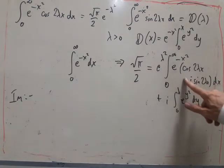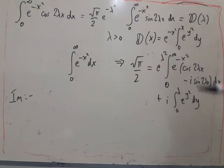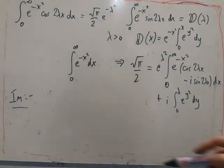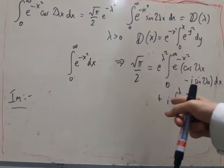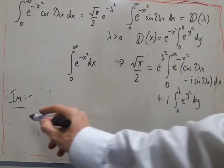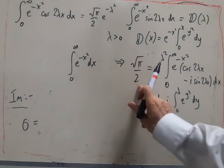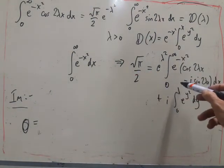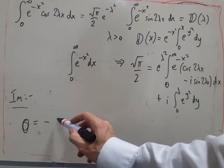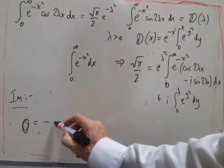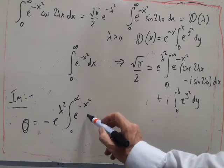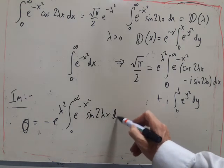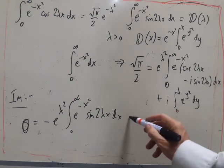Sorry, this should have been a minus sign here because I had e to the minus 2 lambda i x. Okay, so then I can take the imaginary part, and I get 0 on the left-hand side, and on the right-hand side I get minus, so I just get this thing here, so I get e to the lambda squared, 0 to infinity, e to the minus x squared, sine 2 lambda x dx, and then the imaginary part just gives me this.